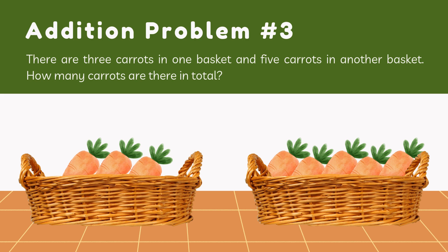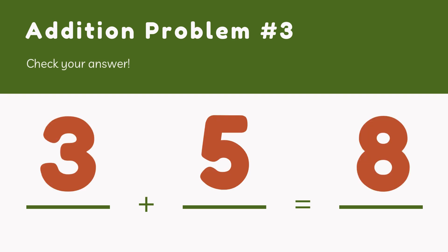Good job, kids. Now this problem. There are three carrots in one basket and five carrots in another basket. How many carrots are there in total? Can you count and tell? The answer will be three carrots plus five carrots together — eight carrots.